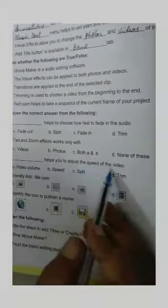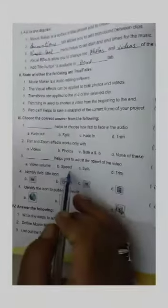Now third bit, choose the correct answers. First one, dash help you to choose how fast fade in the audio. C, fade in. Second one, pan and zoom effects work only with photos. Third one, dash help you to adjust the speed of the video. B, speed.